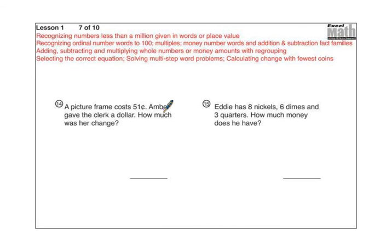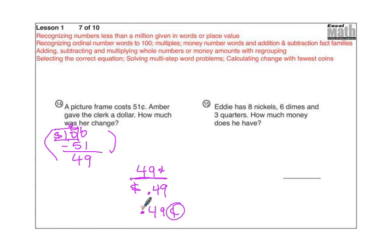A picture frame costs 51 cents. Amber gave the clerk a dollar. How much was her change? Again, go ahead and show your work here, put the answer there, pause the video, turn it back on when you're ready to see the solution. Okay, so if she gave the clerk a dollar, and it costs 51 cents, you're doing a dollar minus 51, which is 49, because we have to regroup. 10 minus 1 is 9, 9 minus 1 is 4. So the answer is 49 cents, or you can write the answer like this. You cannot write the answer like that. No cent sign with decimal point. Not allowed. Either one of these is okay.